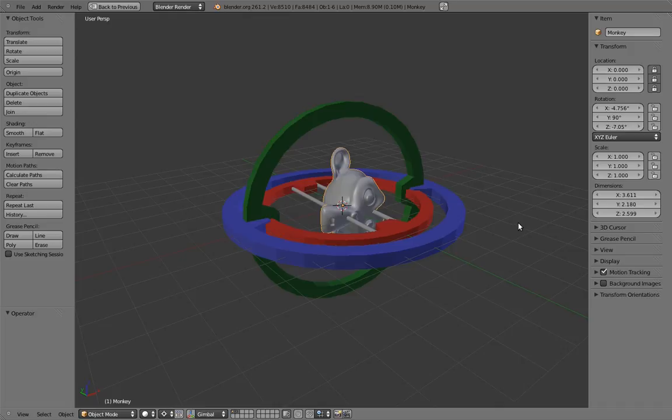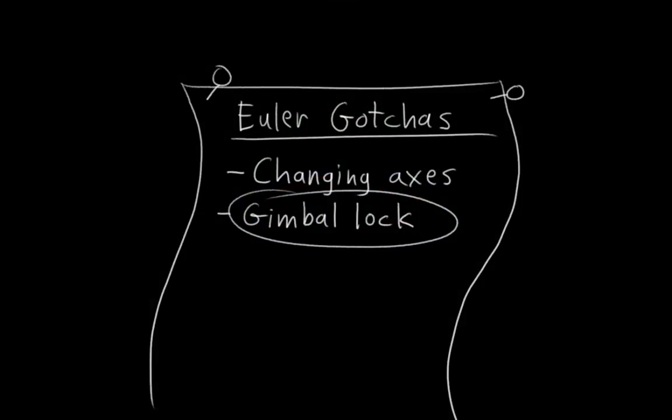This can result in some pretty strange behavior, especially with rotation interpolations, and animators generally ought to be aware of this possibility when animating, and try to avoid rotations that get close to Gimbal Lock. So, that's the second gotcha.